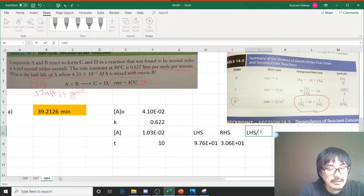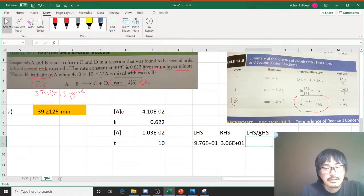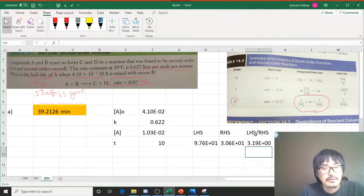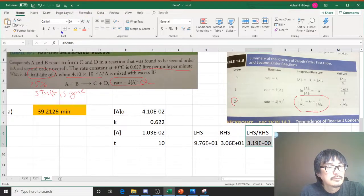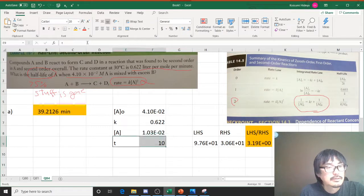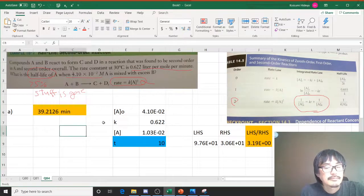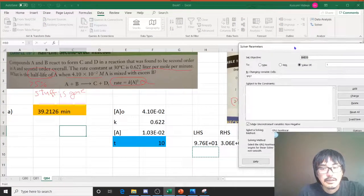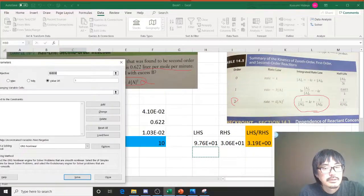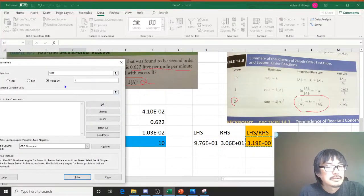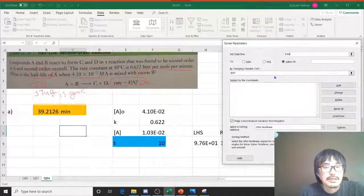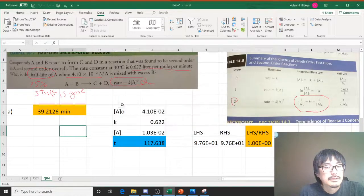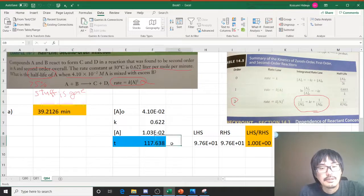Left hand side divided by right hand side, and I want this value to become 1 by changing k times t plus 1 over A naught. And then I want this value to have the value of 1 by changing that guy, right? So uncovering back and follow-up, you get 117. Okay, and solve it, you get 117 minutes.